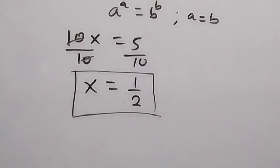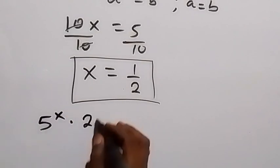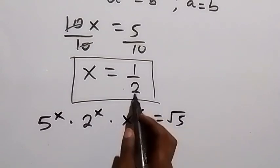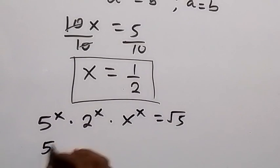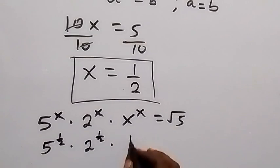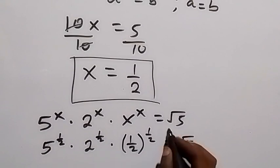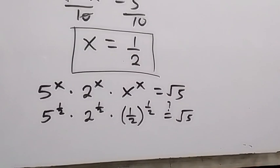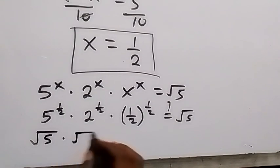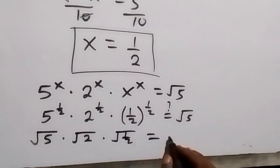Now let's check. From what we have: 5 raised to power x, times 2 raised to power x, times x raised to power x, equals root 5. Substituting x equals one half, each term raised to power one half can be written as a square root. So we have square root of 5, times square root of 2, times square root of one half.